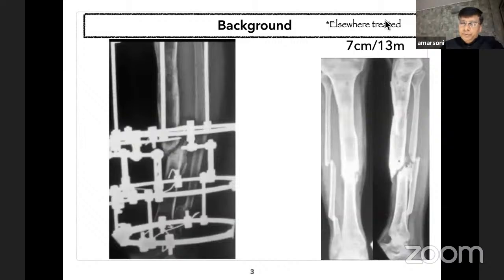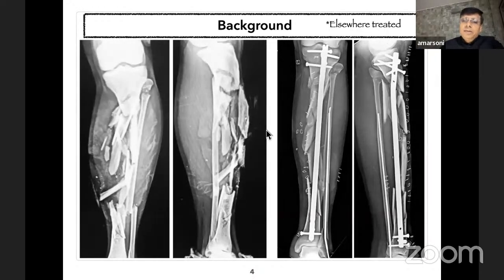Another case: this patient had a seven centimeter bone gap and was in frame for 13 months. At the end of 13 months, at frame removal, he had a non-union, and in such cases it is very difficult to convince the patient for redo Ilizarov. Another case: limb salvage was attempted with a non-Ilizarov method; at the end of two and a half months the patient had undergone multiple surgeries.